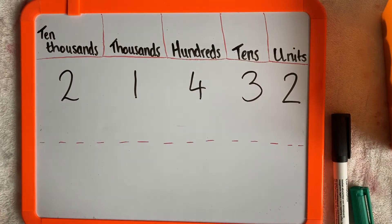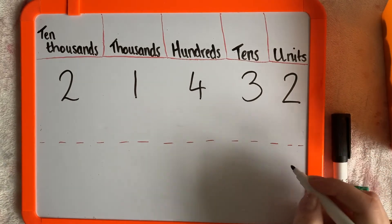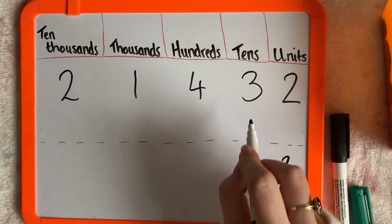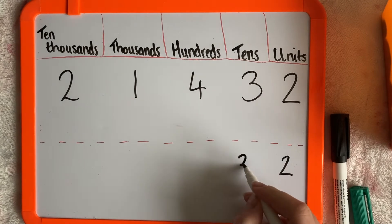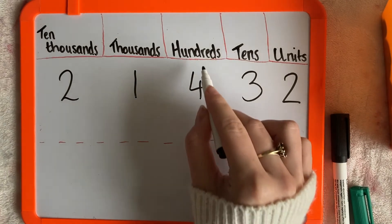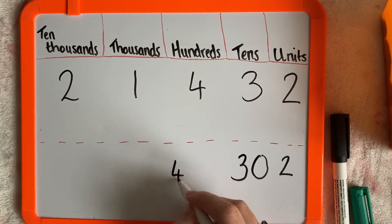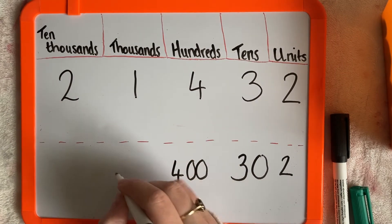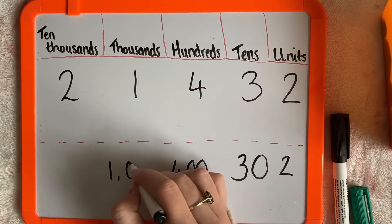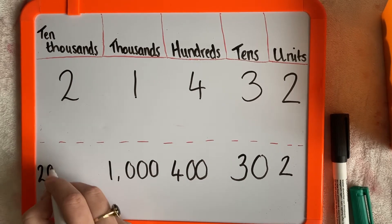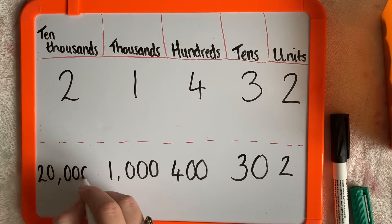So when the two is in the units column, here, it's worth two. When the three is in the tens column, it's worth 30. When the four is in the hundreds column, it's worth 400. When the one is in the thousands column, it's worth 1,000. And when the two is in the ten thousands column, it's worth 20,000.